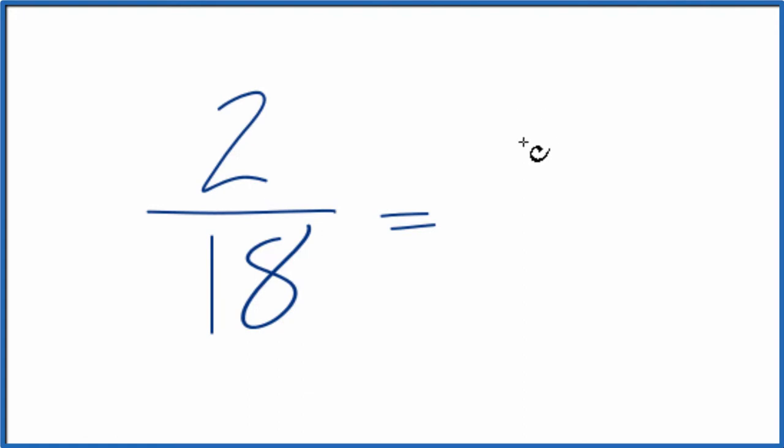2 divided by 2 gives us 1. 18 divided by 2 gives us 9.